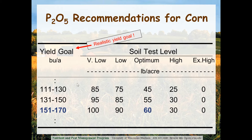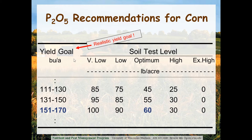A word about yield goal: yield goals should be realistic. We want folks to be optimistic to an extent. In this era with yield monitors on most combines, it's easier to get field-specific yield measurements. A realistic yield goal could be 10 to maybe 15 percent higher than the running multi-year average for a given field. We don't want to assume we can grow 250 bushel per acre corn in Ashland or Bayfield County — these estimates should be based on what's happening on the field with a little optimism.